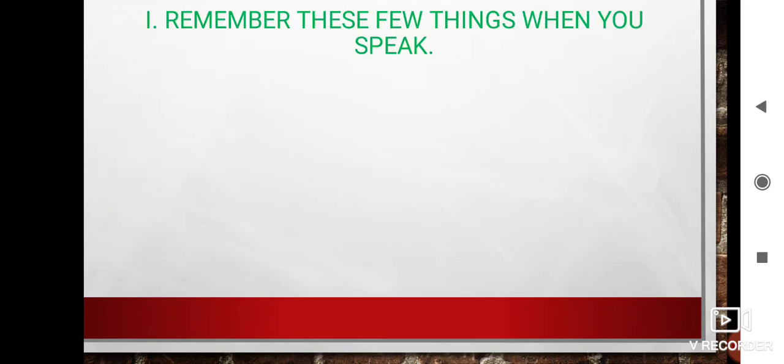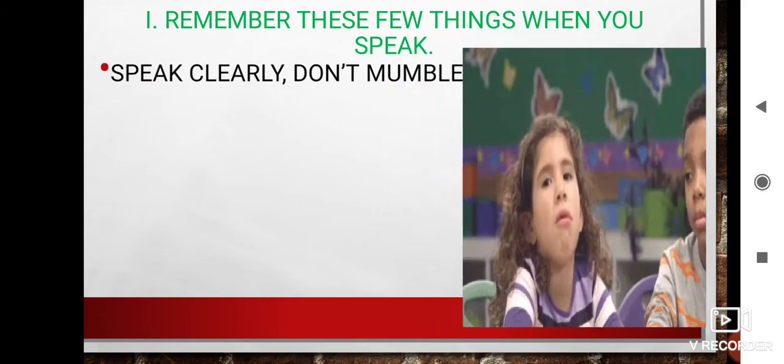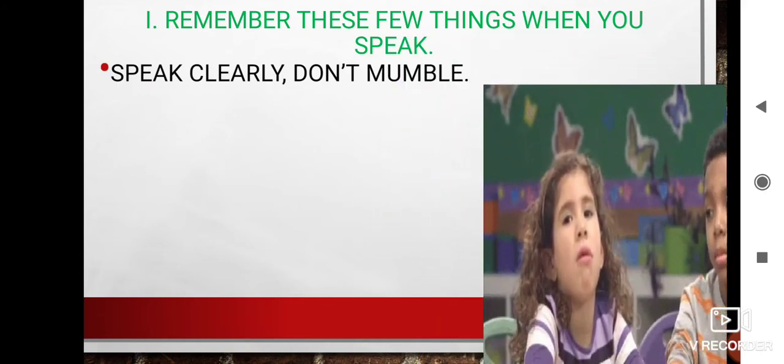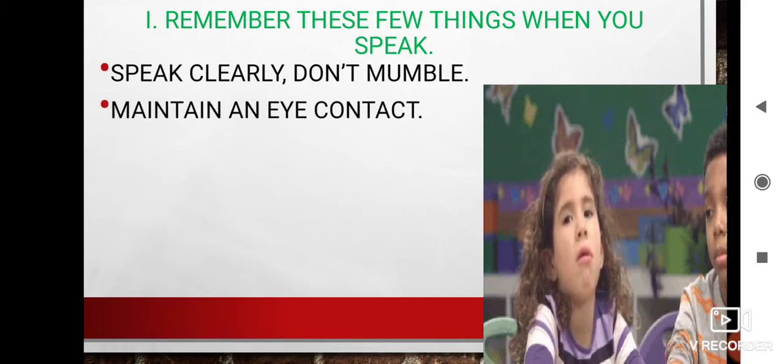So let's begin with the first part: few things to remember when you speak. The first point says speak clearly, don't mumble. Mumble means saying something quietly and making it difficult for others to hear it. Hence, it is extremely important to speak clearly. Next point: maintain an eye contact.